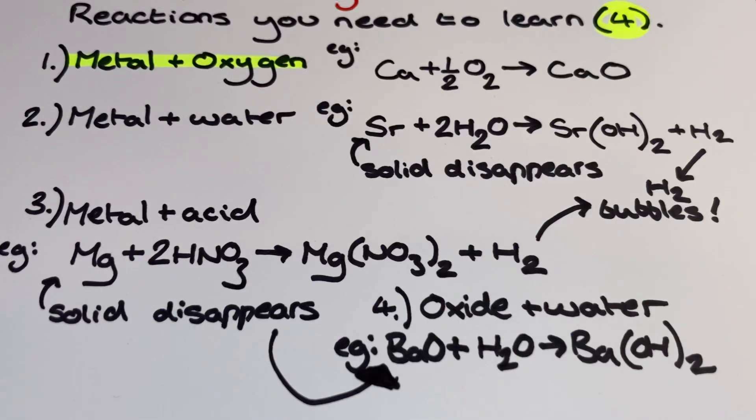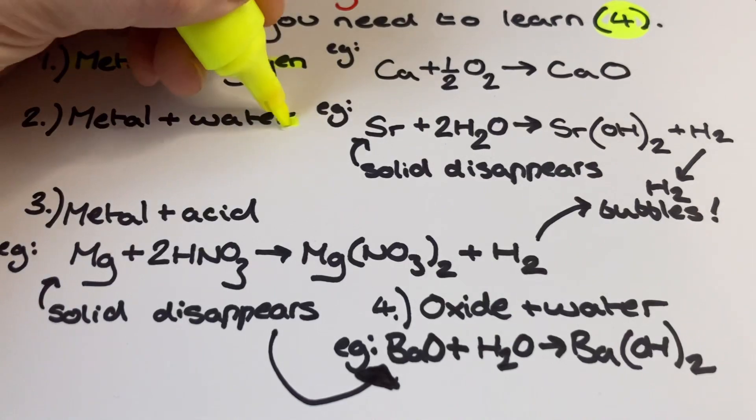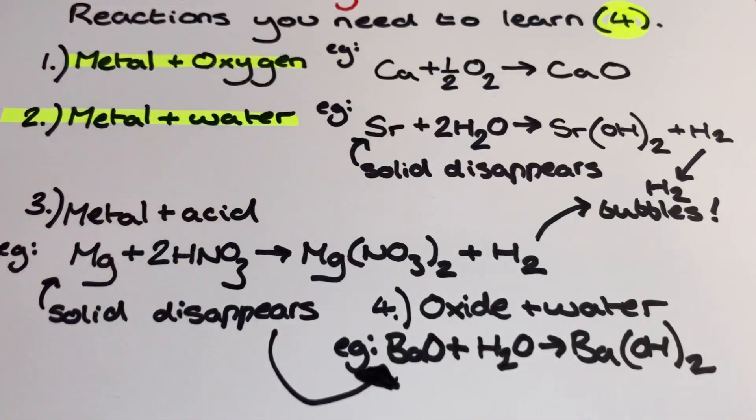The second reaction is the metal and water, where one mole of the metal reacts with two moles of water to produce one mole of the alkali—please be careful with that formula—and a mole of hydrogen gas. For observations we would see the solid metal disappear and the hydrogen bubble.